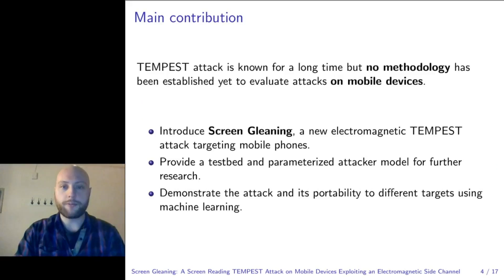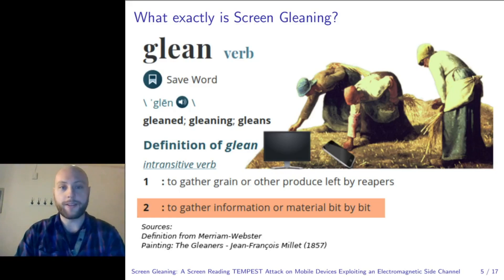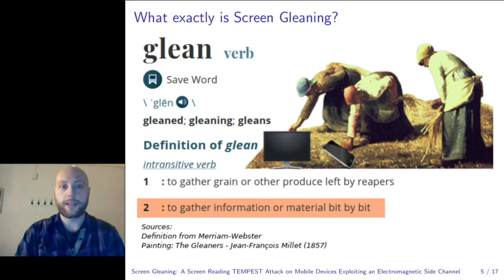But what exactly is Screen Gleaning? Glean, according to the Merriam-Webster dictionary, is the action of gathering something — initially grain but derived to information — bit by bit. This is what Screen Gleaning is about: gathering information from the emanation of a mobile phone screen.